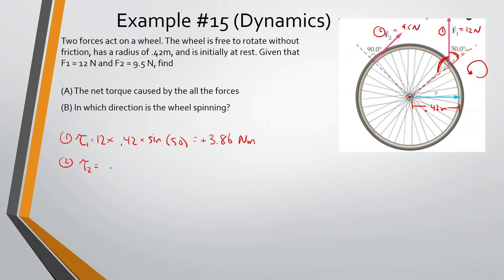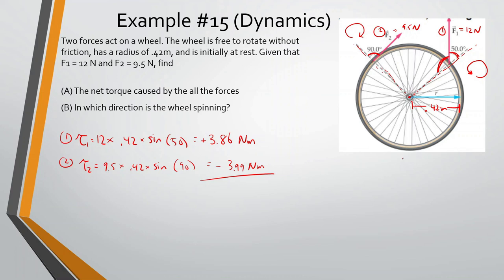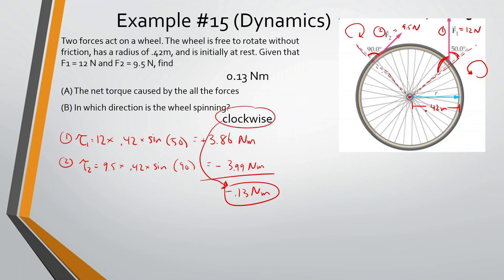Torque 2 equals 9.5 times 0.42 times sine of 90, since that force is perpendicular, giving 3.99 newton-meters. This would rotate the wheel clockwise, so it's negative. The net torque is 3.86 minus 3.99, which equals negative 0.13 newton-meters. The negative sign shows the wheel will be spinning clockwise.